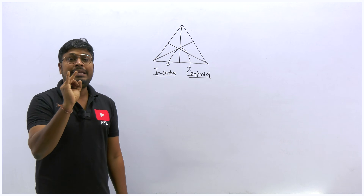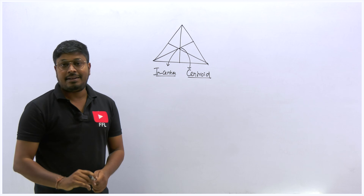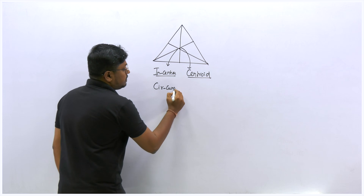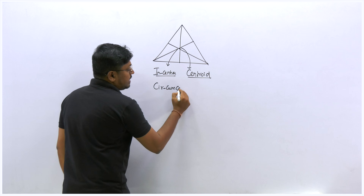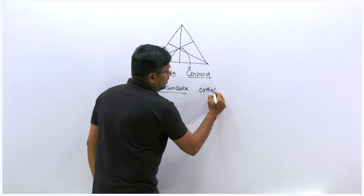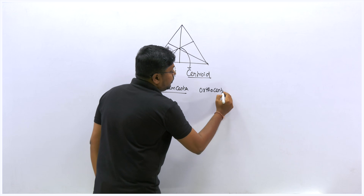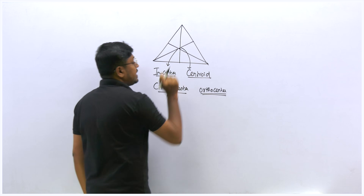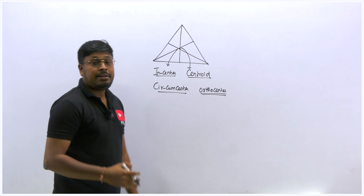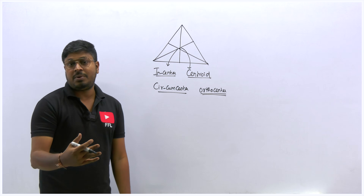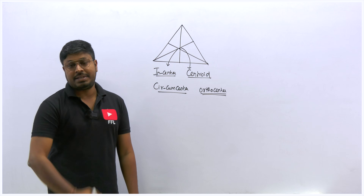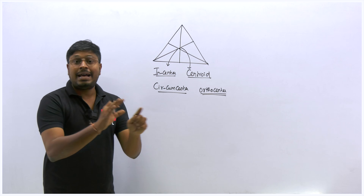There are four ways to define the center point of a triangle: centroid, incenter, circumcenter, and orthocenter. Each word has a different meaning — based on which lines are drawn, the connecting point gets a different name.